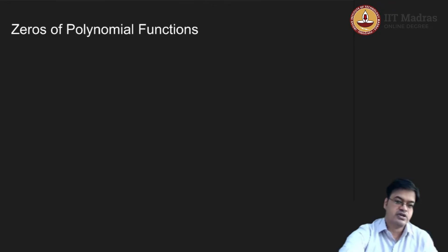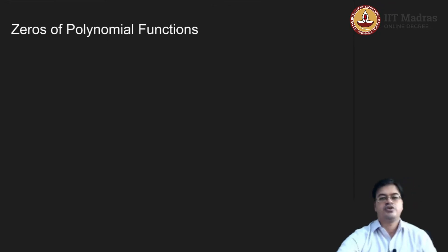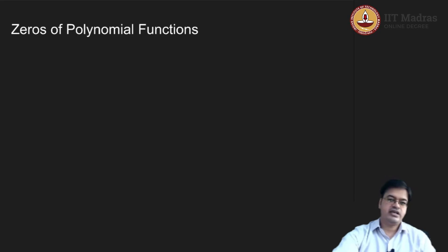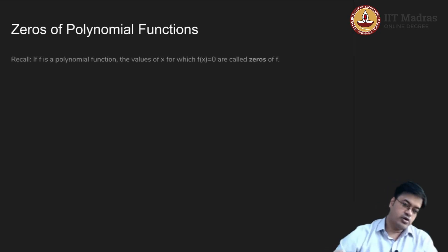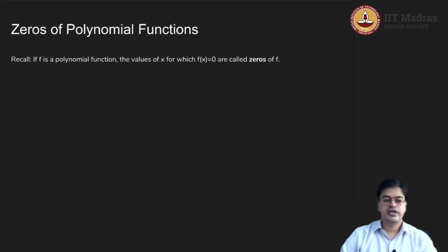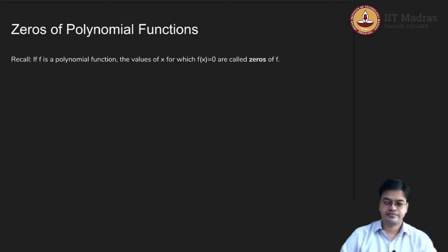Let us focus on zeros of polynomial functions. For clarity, let us recall what a zero of a polynomial function is. If f is a polynomial function, then the values of x for which f(x) is equal to 0 are called zeros of f.